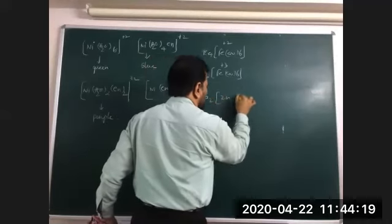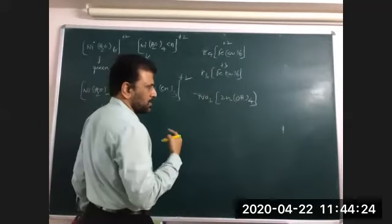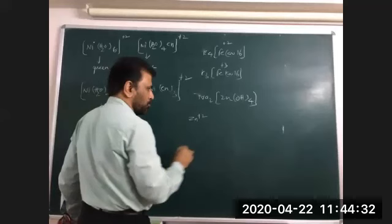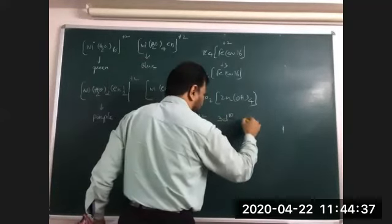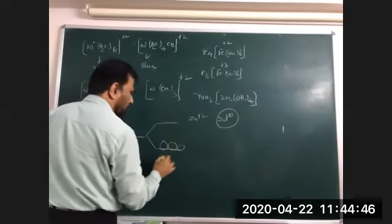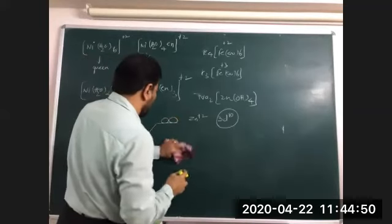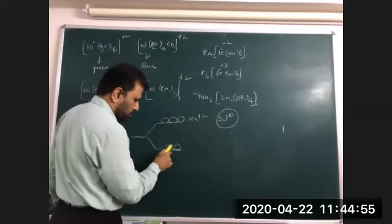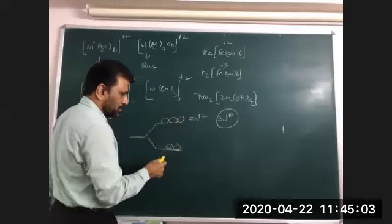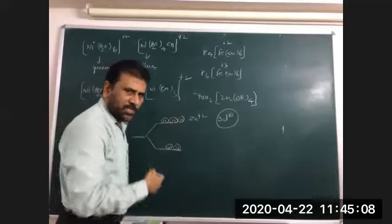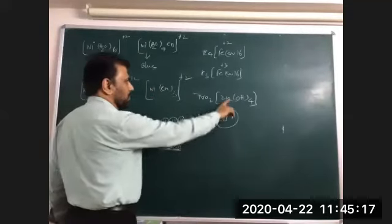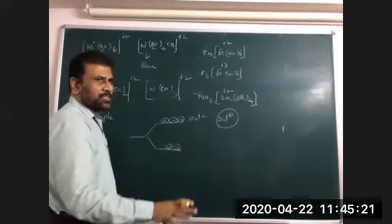Now consider Na₂[Zn(CN)₄]: the oxidation state of zinc is +2. Configuration of Zn²⁺ is 3d¹⁰. Even after crystal field splitting, all five d orbitals are fully filled — four electrons at bottom (eg) and six electrons at top (t2g) for tetrahedral, or fully filled. There is no possibility of any electron transitioning from one position to another. Therefore zinc complexes have no color — they are colorless.